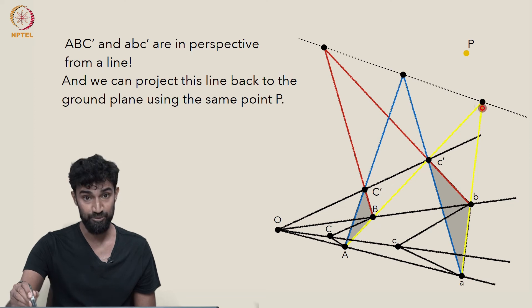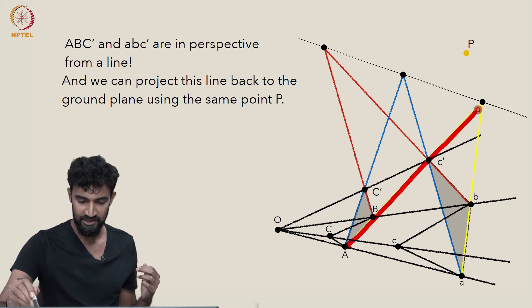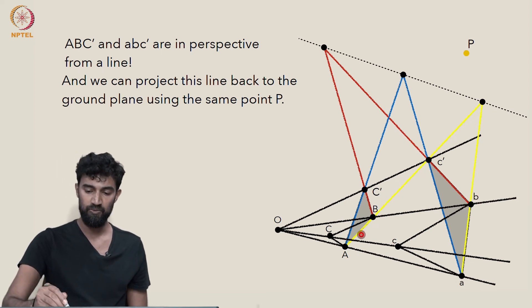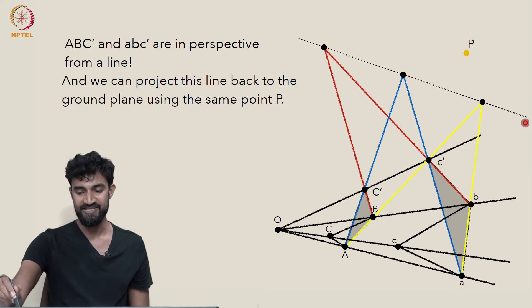on the ground plane. A and B and little a and little b were never lifted. So these lines are in the ground plane, their intersection is in the ground plane. This axis goes through the ground plane over here.